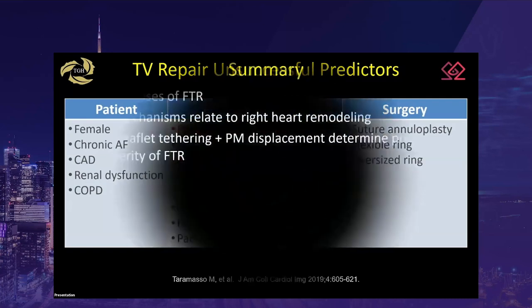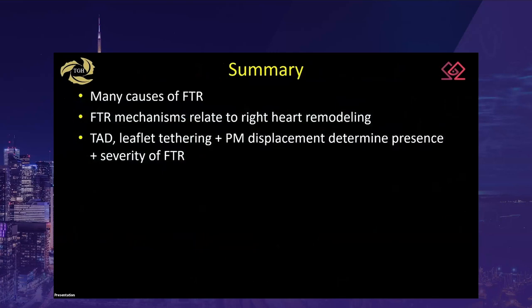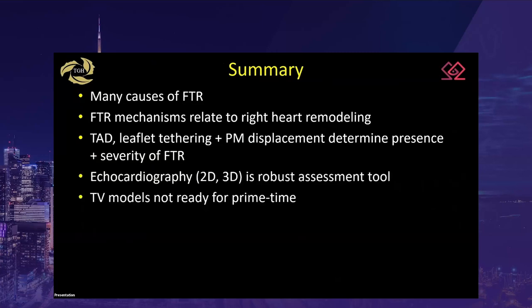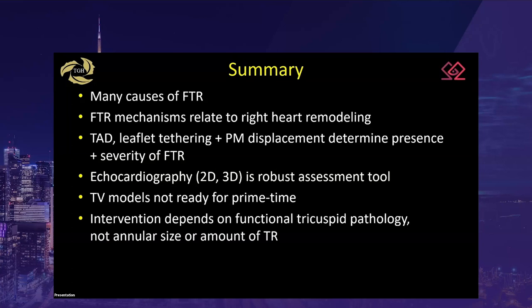In summary, there are many causes of functional TR, with mechanisms relating to right heart remodeling. Tricuspid annular dilatation, leaflet tethering, and papillary muscle displacement determine the presence and severity of functional TR. Echocardiography is a robust assessment tool, though tricuspid valve models are not ready for clinical practice. Intervention depends on functional tricuspid pathology — not just annular size or the amount of tricuspid regurgitation.